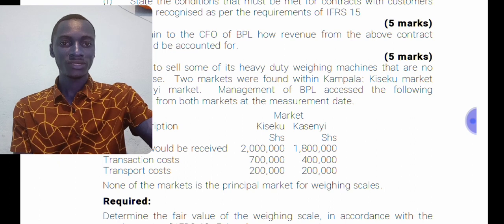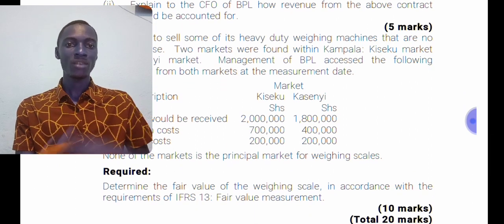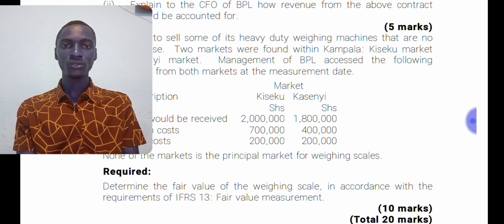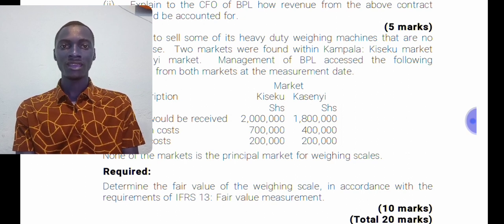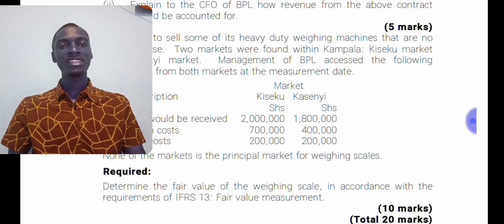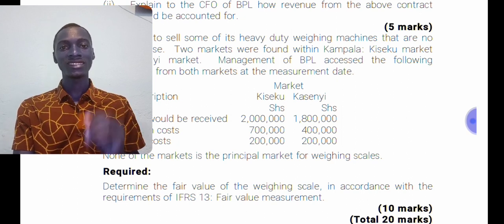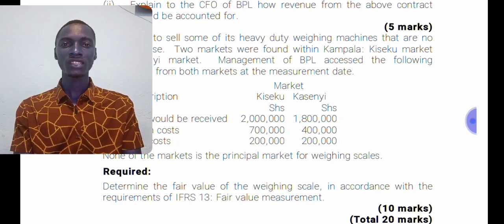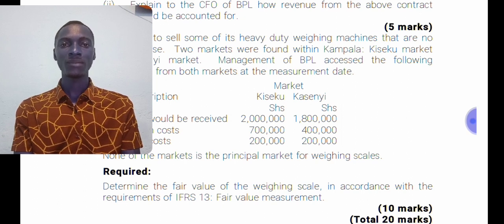Since the question asks us to determine the fair value of the weighing scale in accordance with IFRS 13 for 10 marks, you should start your answer by defining fair value. According to IFRS 13, fair value is defined as the price that would be received to sell an asset or paid to transfer a liability in an orderly transaction between market participants at the measurement date.